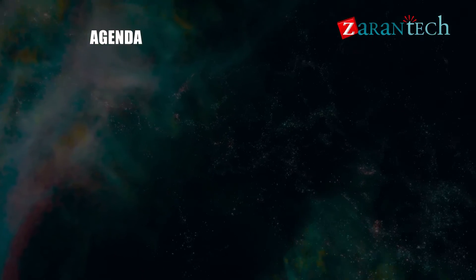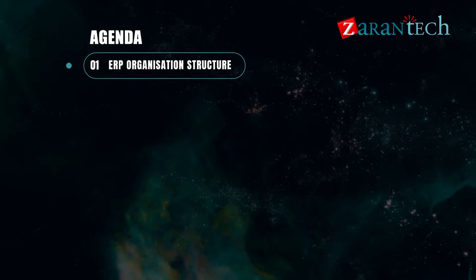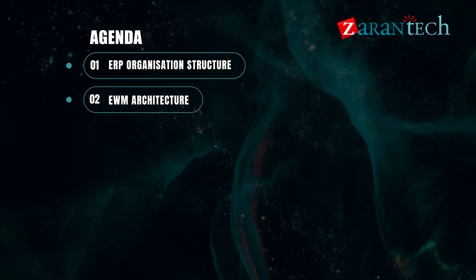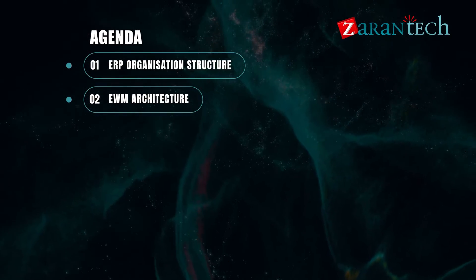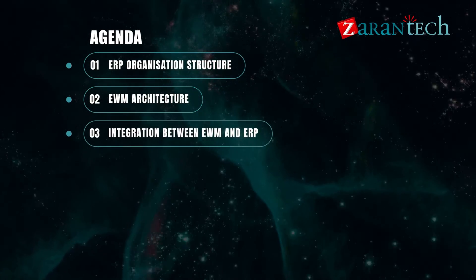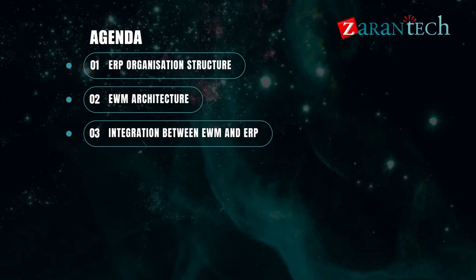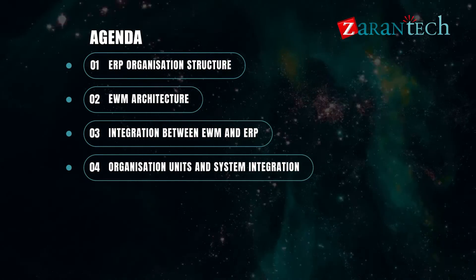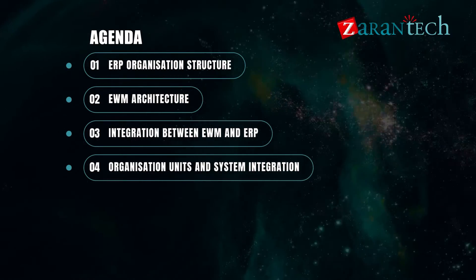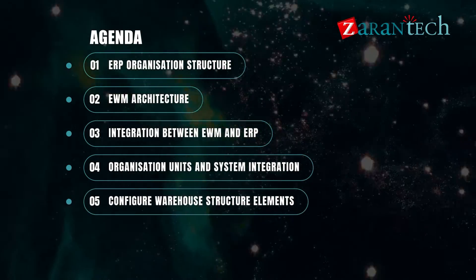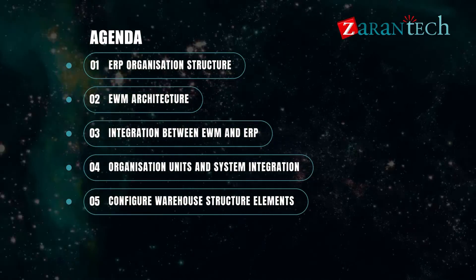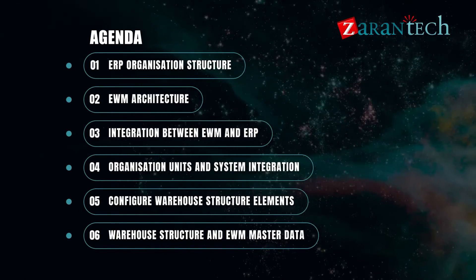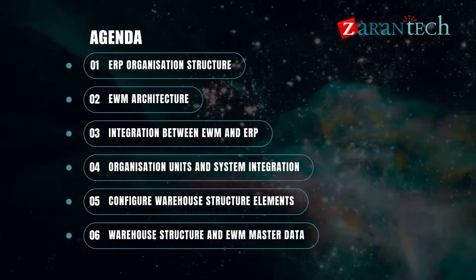Let us take a look at the agenda. 1. ERP organization structure. 2. EWM architecture. 3. Integration between EWM and ERP. 4. Organization units and system integration. 5. Configure warehouse structure elements. 6. Warehouse structure and EWM master data.